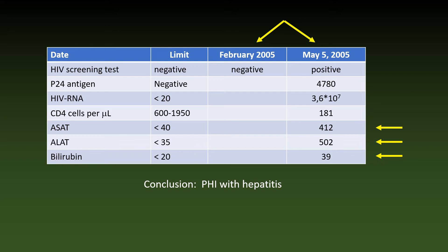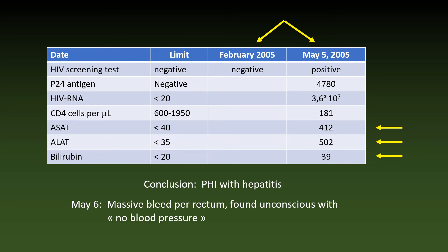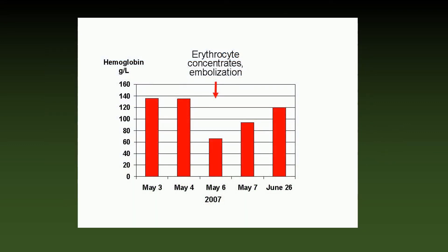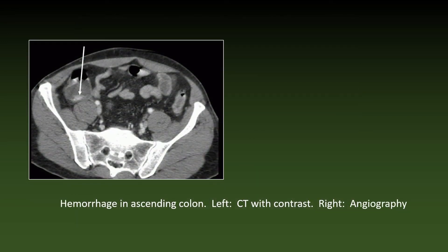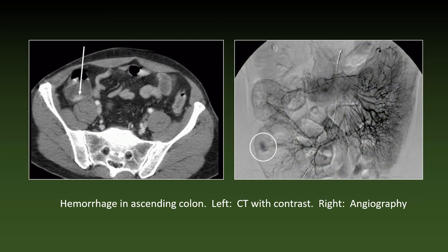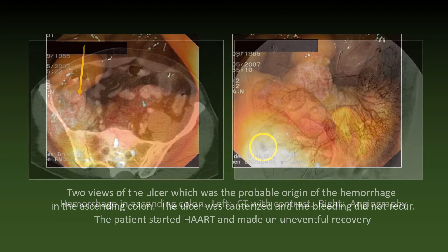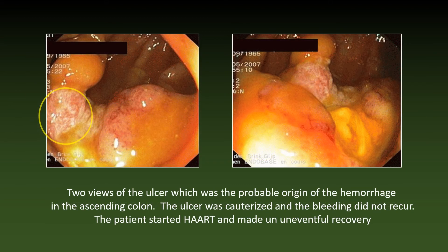However, on May 6, the patient was found unconscious with unrecordable blood pressure due to a massive bleed per rectum. This graph illustrates the massive fall in hemoglobin concentrations from May 4 to May 6 due to the bleed. The contrast-enhanced CT on the left and the angiography on the right show active bleeding in the ascending colon. Two views of the ulcer in the ascending colon — the probable origin of the hemorrhage — are shown. The ulcer was cauterized, the bleeding did not recur, and the patient started HAART and made an uneventful recovery.